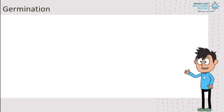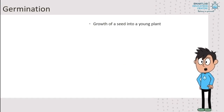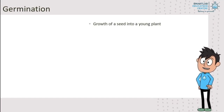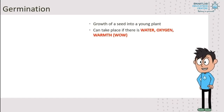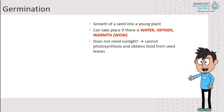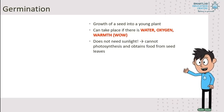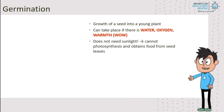Now, let's look at the last stage: germination. Germination refers to the growth of a seed into a young plant. Germination occurs only when there is water, oxygen, and warmth. Germination doesn't require sunlight, because the seed cannot undergo photosynthesis and instead obtains food from its seed leaves.